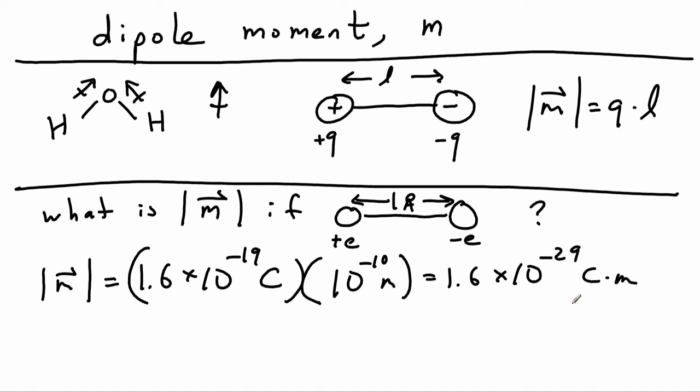So 1 debye is equal to 3.34 times 10 to the negative 30 coulomb meters. So we're going to use that. If you look up dipole moments, they're almost always listed in debye.